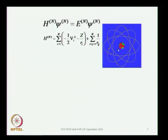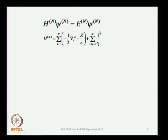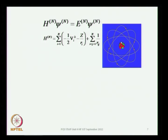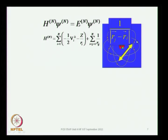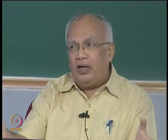Now look at the system: you have Z protons in the nucleus and the 1/r_ij term between the i-th and j-th electron. This is the distance between them. But the problem is that electrons are not classical particles — they are not point charges. You cannot say this is where the i-th electron is located and this is where the j-th is. That is how you would describe the classical Coulomb interaction between two classical charges, but electrons are not like that. Electrons are described by waves in quantum mechanics.